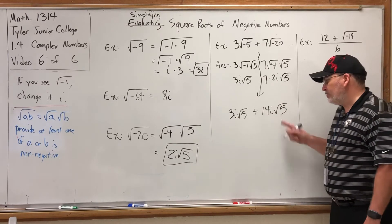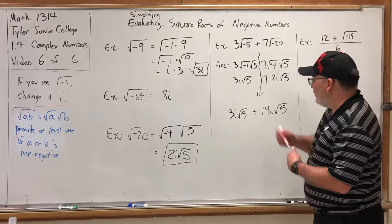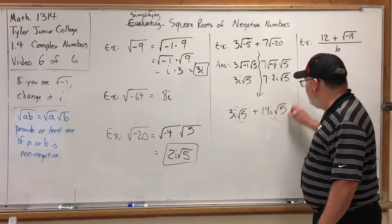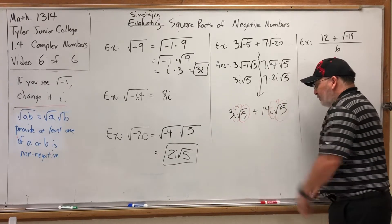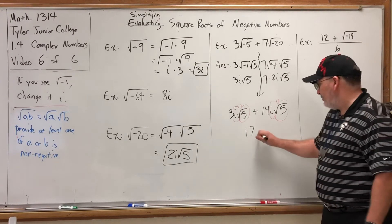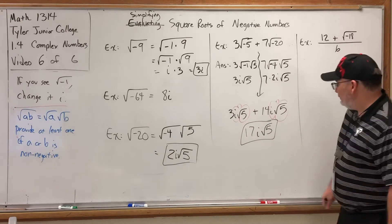It's almost like we're adding three ugly apples with fourteen more ugly apples. In this case, the apple is i times the square root of 5. So three apples plus 14 apples is 17 apples. Oh, I'm sorry. They're not apples. They are i times the square root of 5. Ta-da.